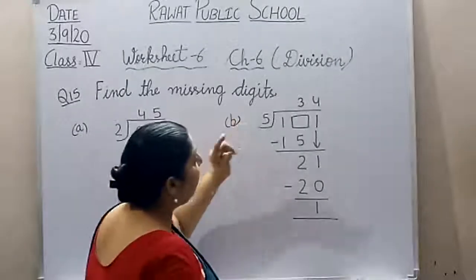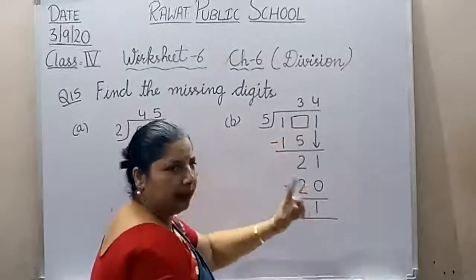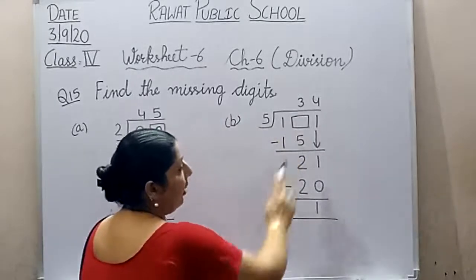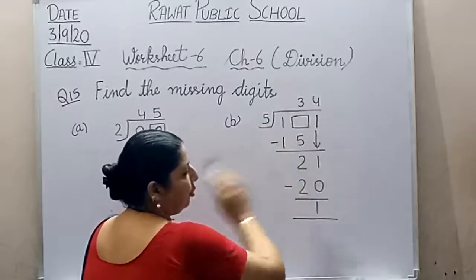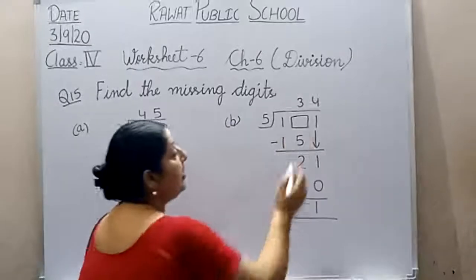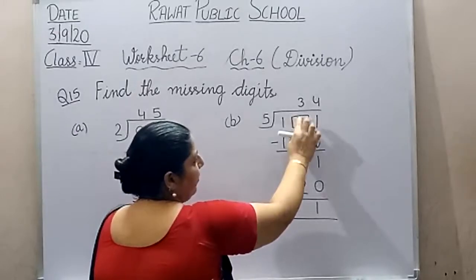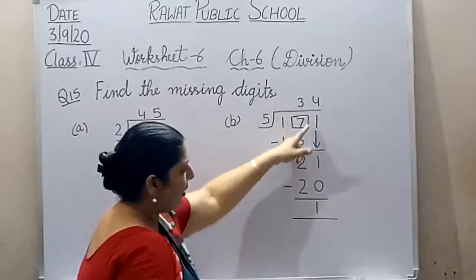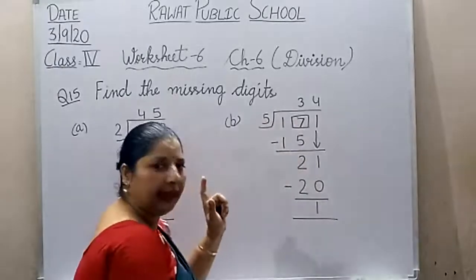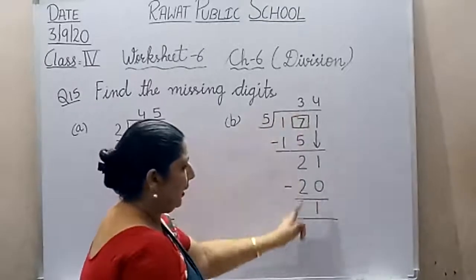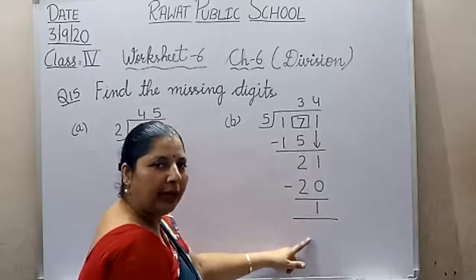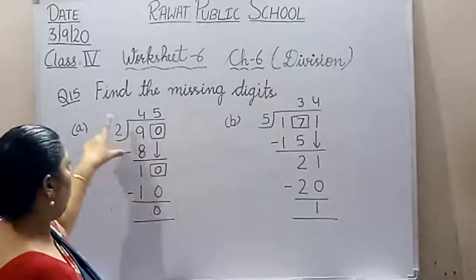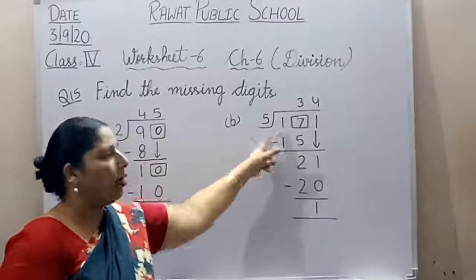Now sum number B. Look at the answer — we have 5 threes are 15. Now from which number did we subtract 15 to get 2? Which number minus 5 gives us 2? The answer is 7. 5 threes are 15, 7 minus 5 gives 2. Carry 1 above — making it 21. 5 fours are 20, and 21 minus 20 gives remainder 1. So in this column the missing number is 7. In sum A both columns get 0, and in sum B this column gets 7.